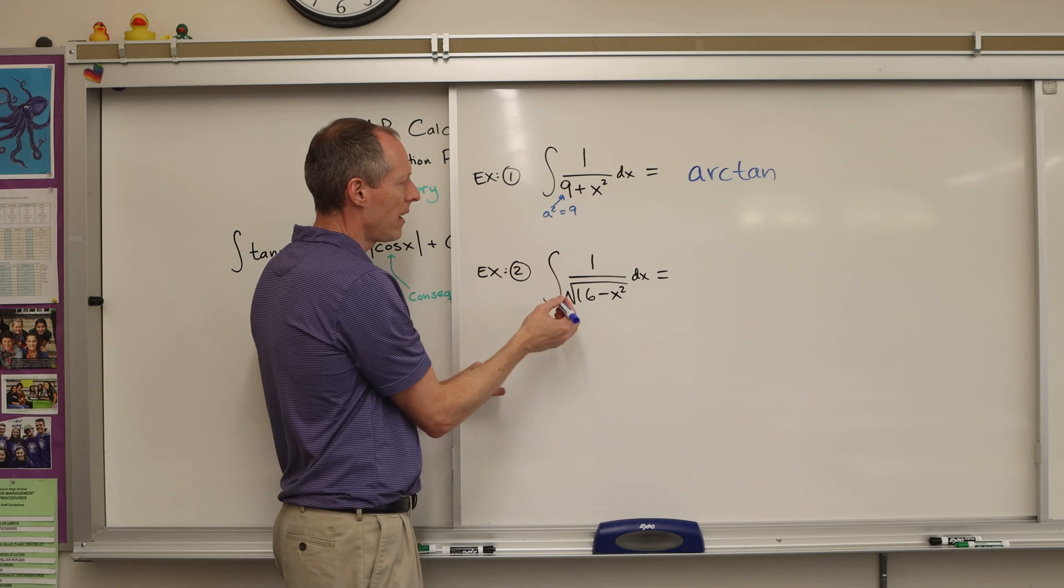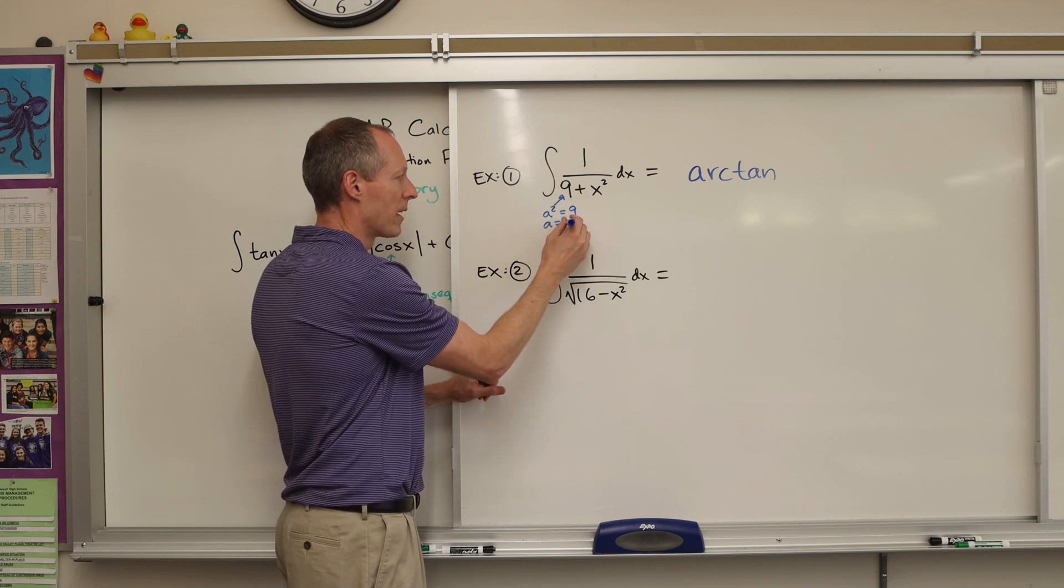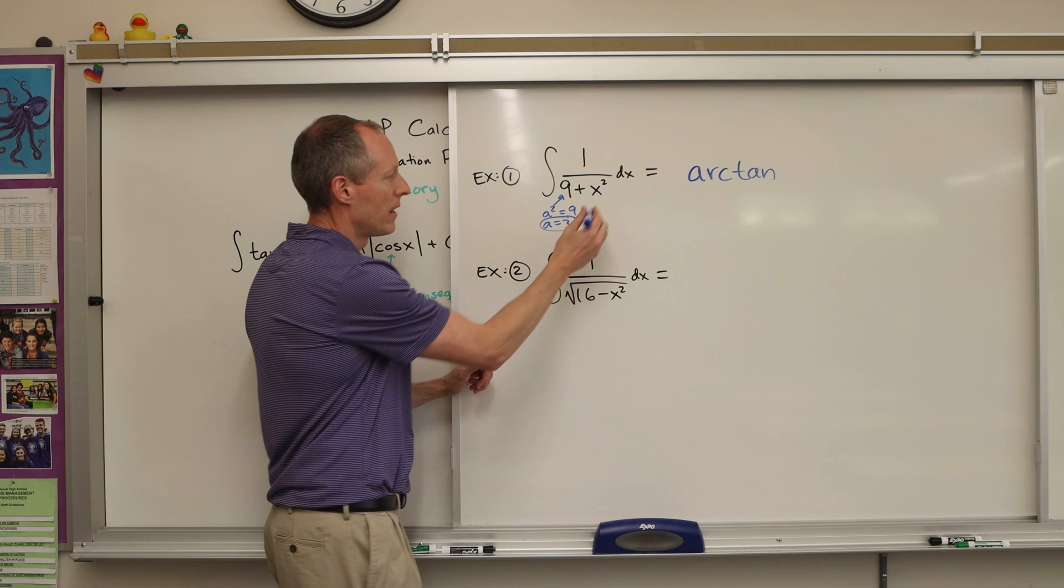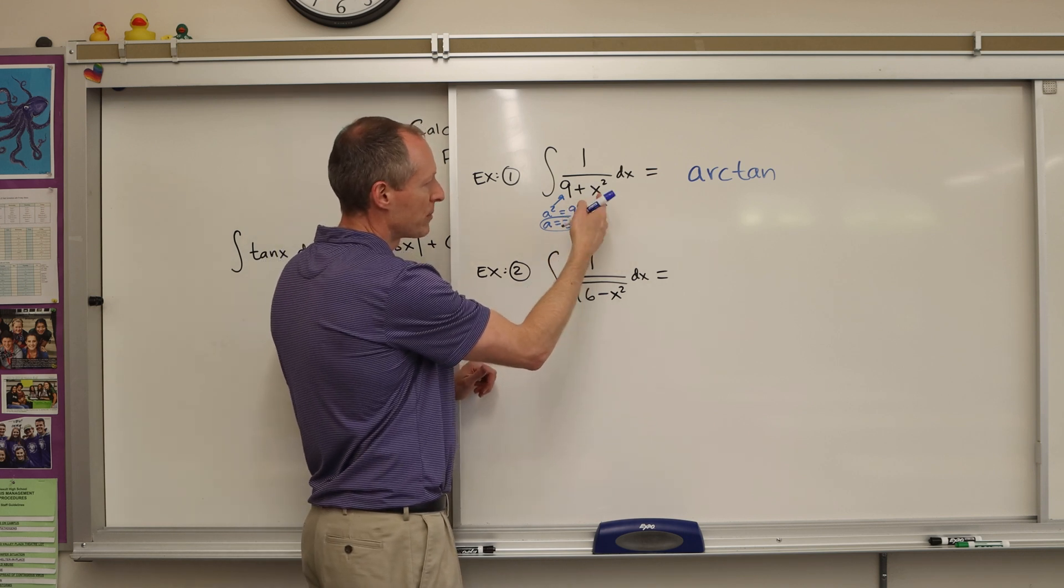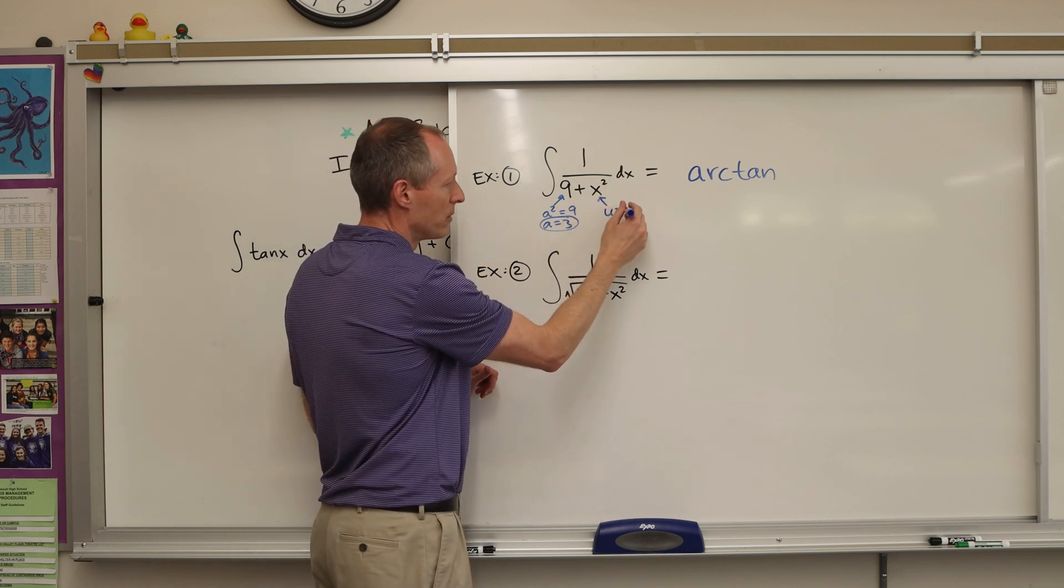Well, if a squared is 9, then if you take the square root of that, a must be positive 3. And then this is representing u, but that's just x squared, so basically u is x.